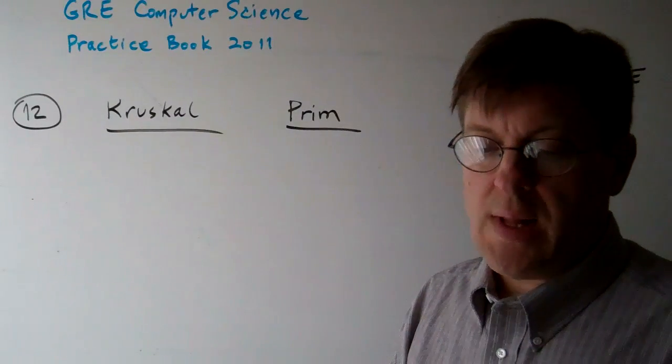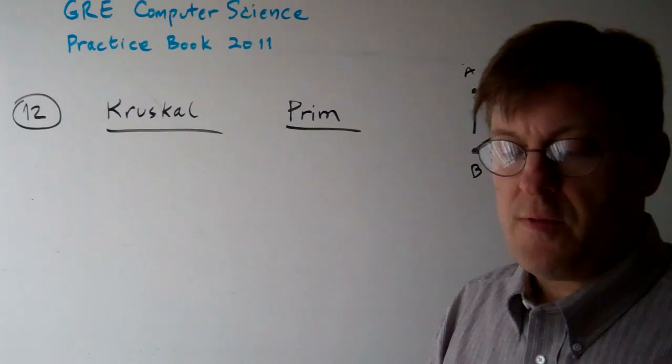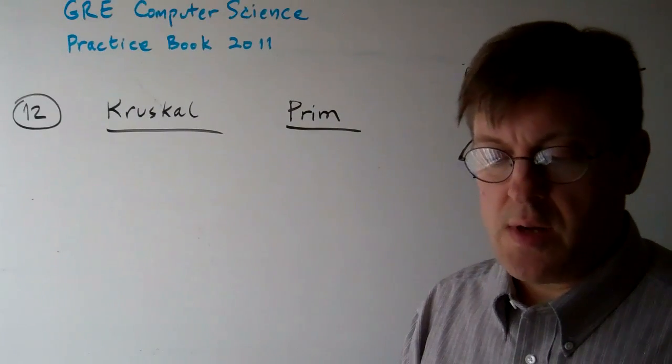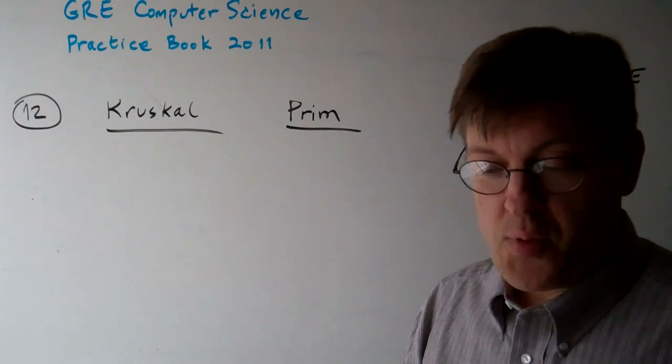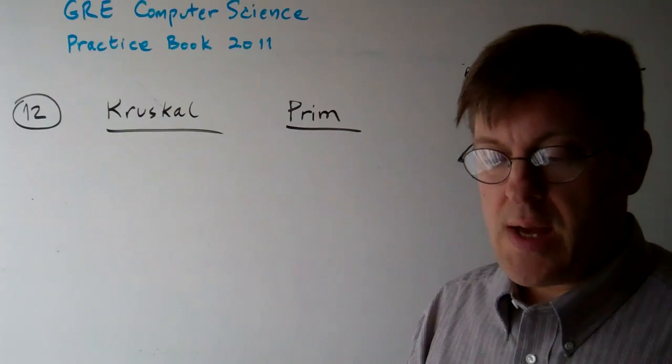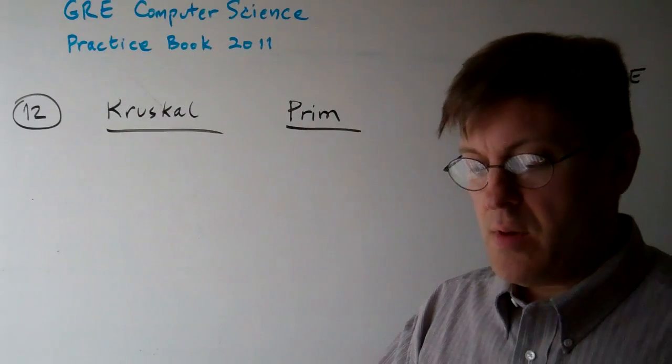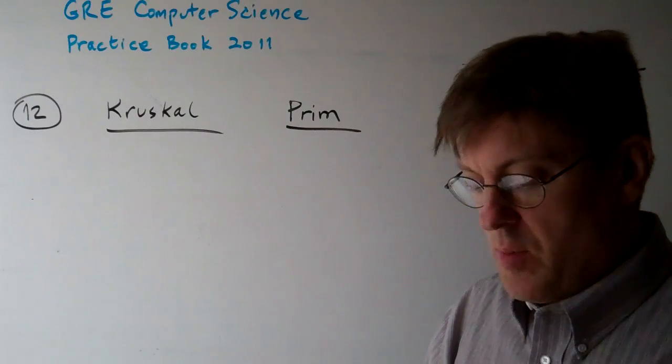Question 12. Two classical algorithms for finding a minimum spanning tree in a graph are Kruskal's algorithm and Prim's algorithm. Which of the following are the design paradigms used by these algorithms? There's a whole bunch of different options.